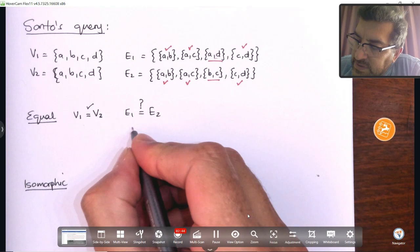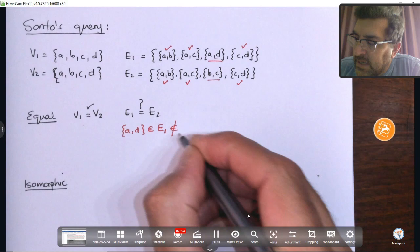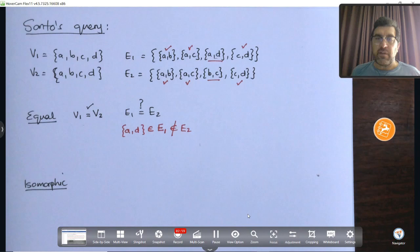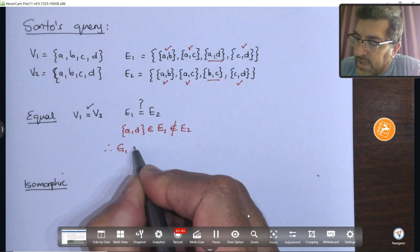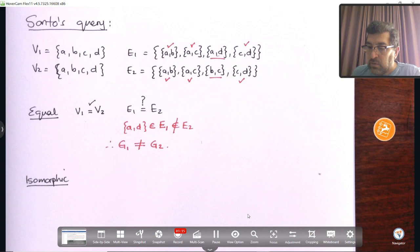So, how do we now argue this? We go about and we say, A,D, the edge A,D is an element of edge set 1, but it's not an element of edge set 2. And that's enough. That's enough for us to conclude that, therefore, graph 1 is not equal to graph 2. Only based on the fact that those two things are not equal.